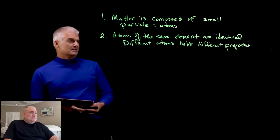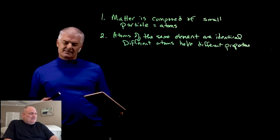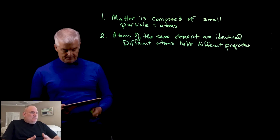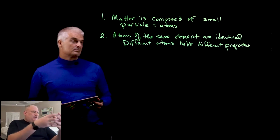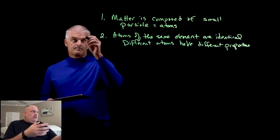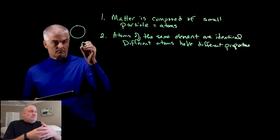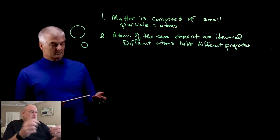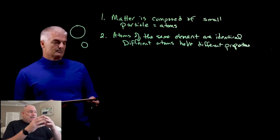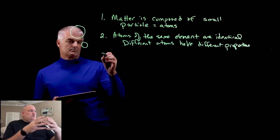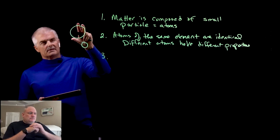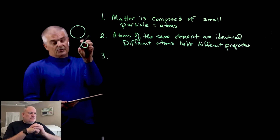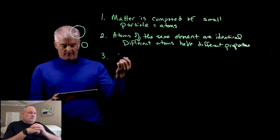Point two: atoms of the same element are identical, and different atoms have different properties. He thought the atom looked like a big ball, and he came up with the idea that a copper atom is the same as other copper atoms, and gold atoms are the same as other gold atoms. So a gold atom would be a big sphere and a little hydrogen atom would be a little sphere — but they're all still spherical.